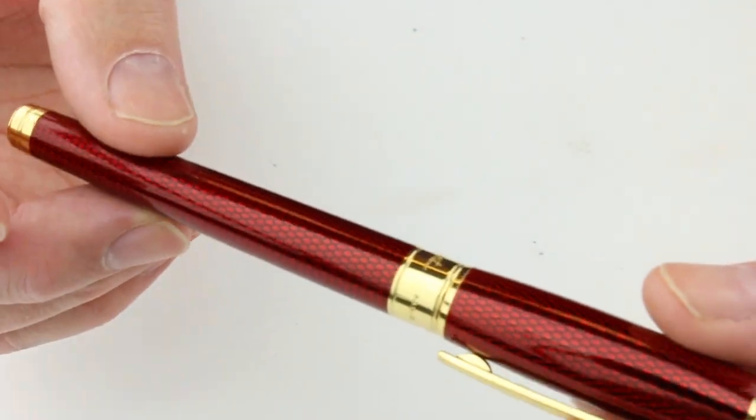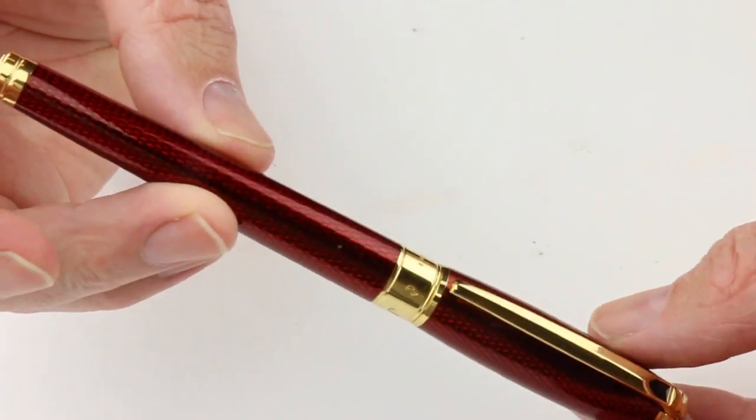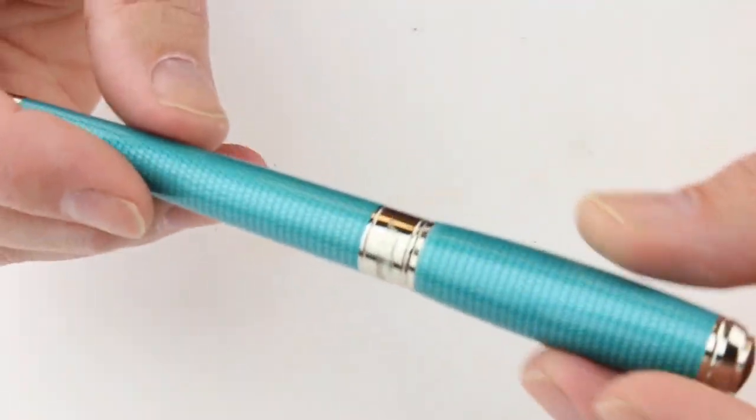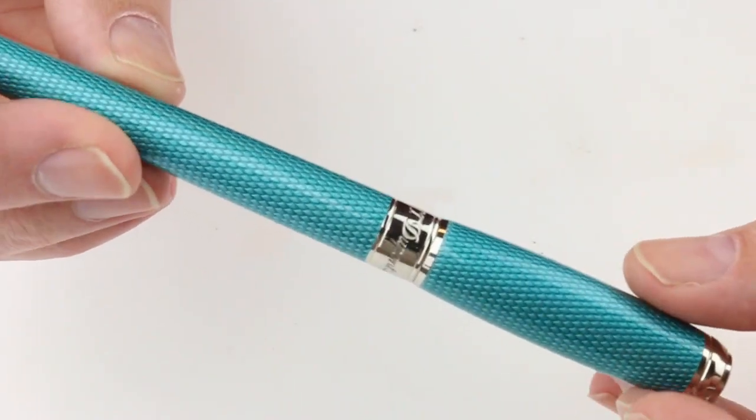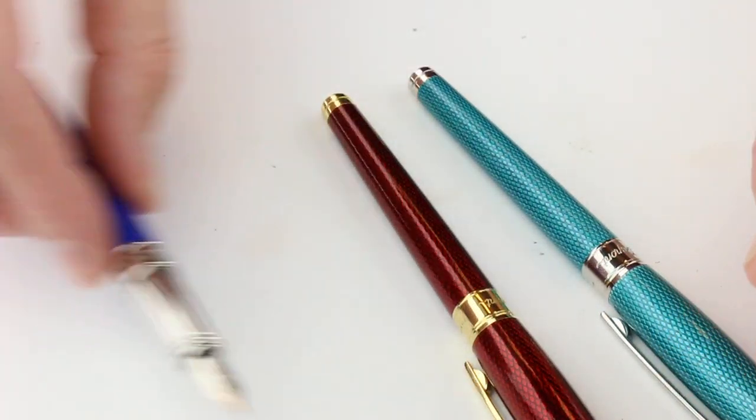I just wanted to show you the different colors. This happens to be the burgundy with the gold color trim and the turquoise color with the silver colored trim. I'm going to give you the idea of what each one of them looks like. Great pens from France.